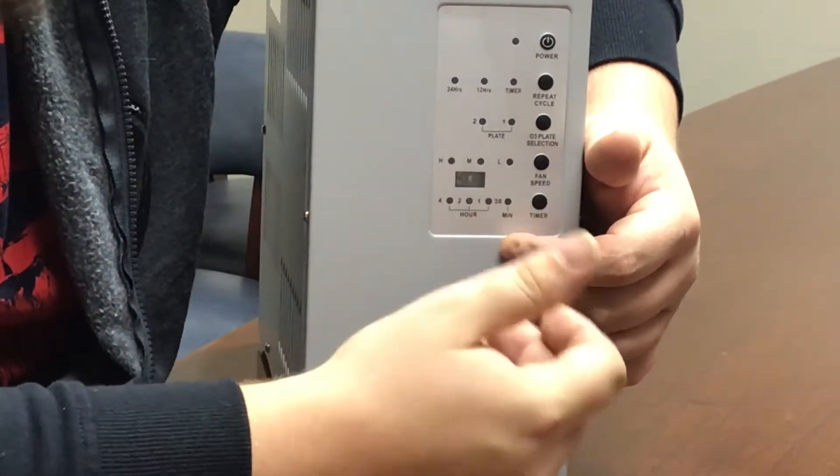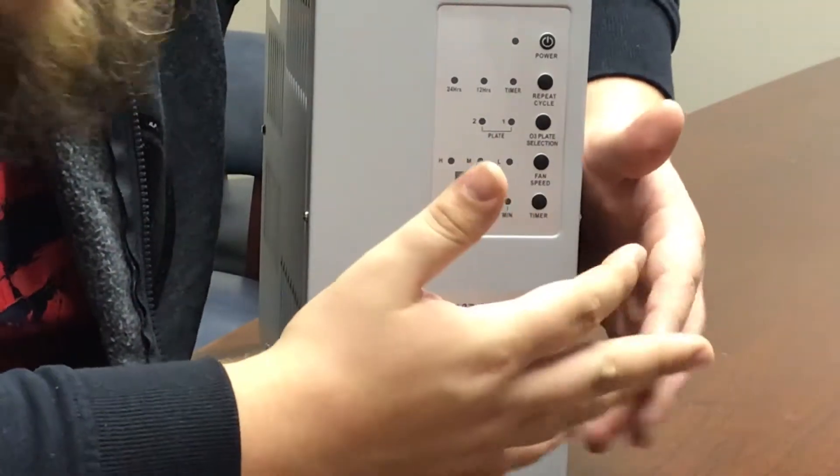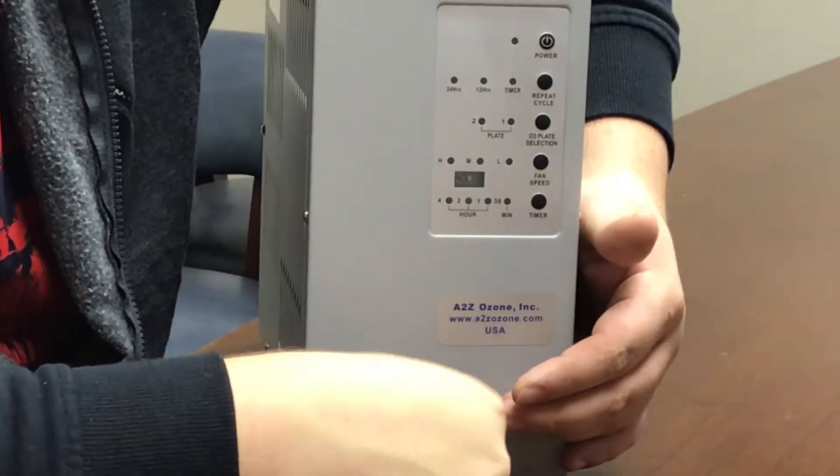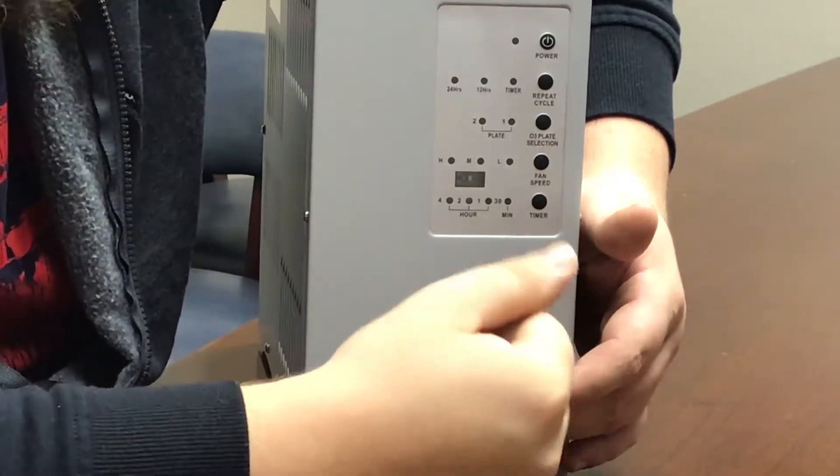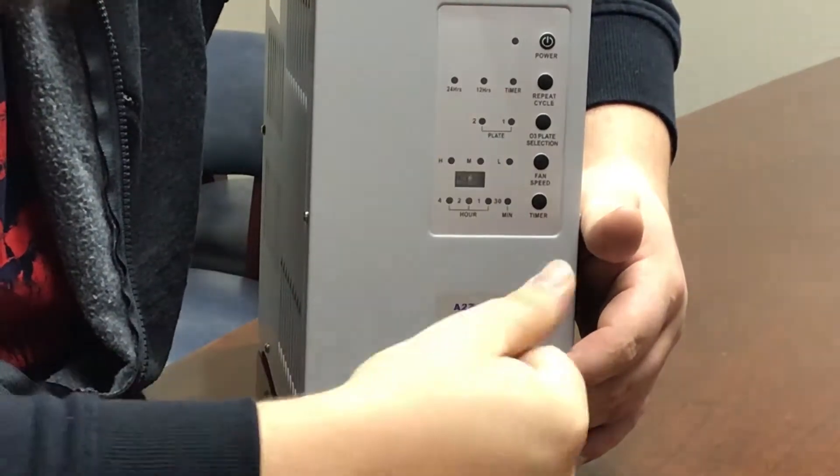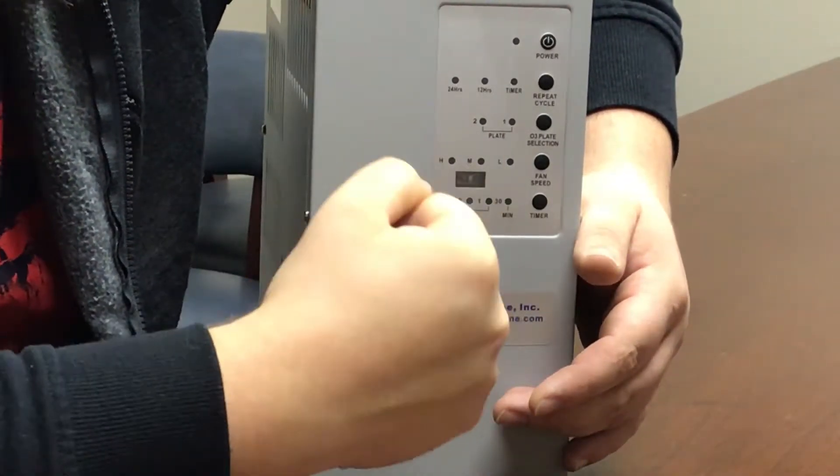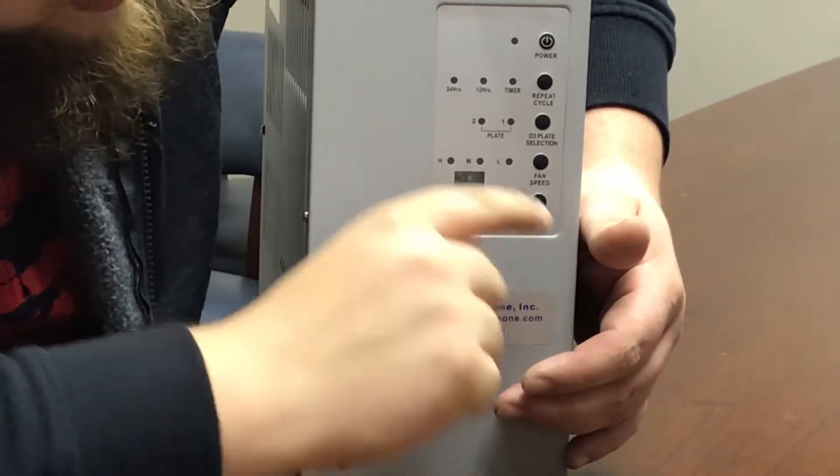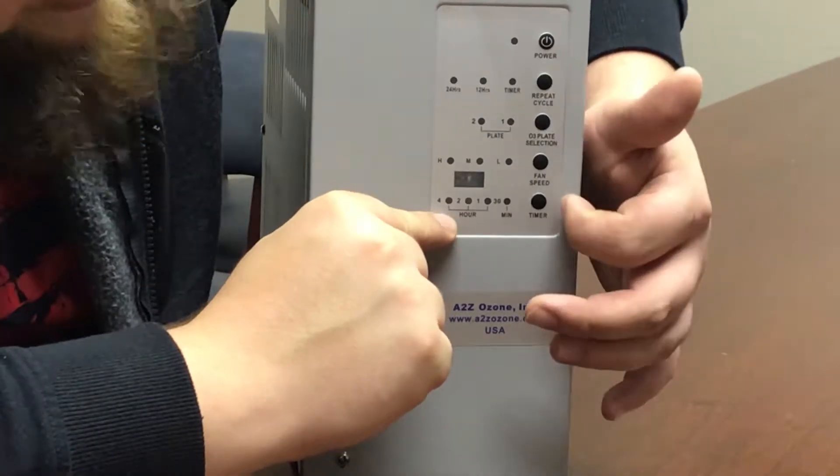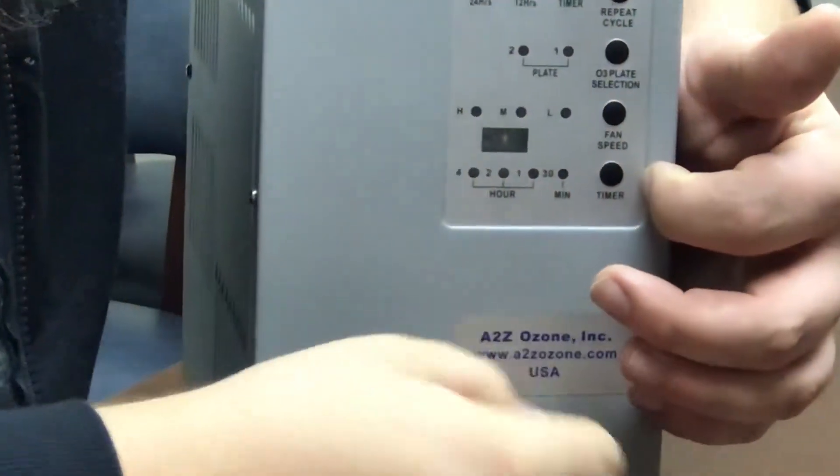You'll go ahead and set your unit to four hours for the normal timer. Then you'll come up here for your repeat cycle. Your repeat cycle has three settings: timer, 12 hours, and 24 hours.